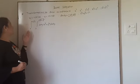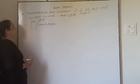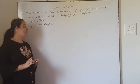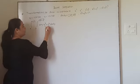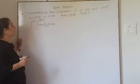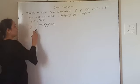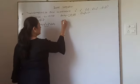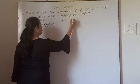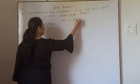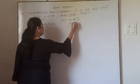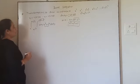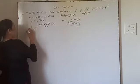Now we take the second example: evaluate ∫₀^(A/√2) ∫_y^(√(A²−y²)) log(x²+y²) dx dy. Again, we have the term x²+y², so we transform to polar coordinates. The limits for x go from y to √(A²−y²), meaning x = y is one boundary, and x²+y² = A² is the other — a circle with center at origin and radius A.